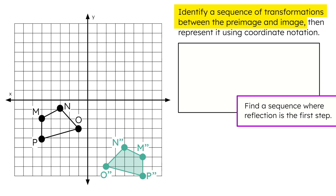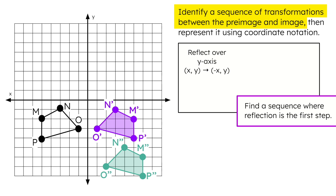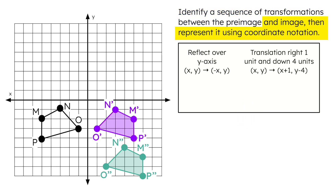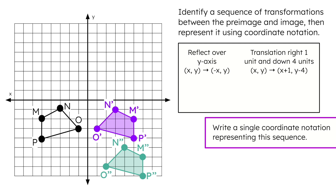A sequence where reflection is the first step would start with a reflection over the y-axis. Its orientation matches that of the image now, but we still need to complete the sequence. You probably realize that we need two translations here. We can do a translation 4 units down followed by a translation right 1 unit, or a translation right 1 unit then a translation 4 units down. Regardless of the order, the coordinate notation would be (x + 1, y − 4). Now that we have our sequence, let's represent it with a single coordinate notation. Pause now to write it and come back once you're ready.